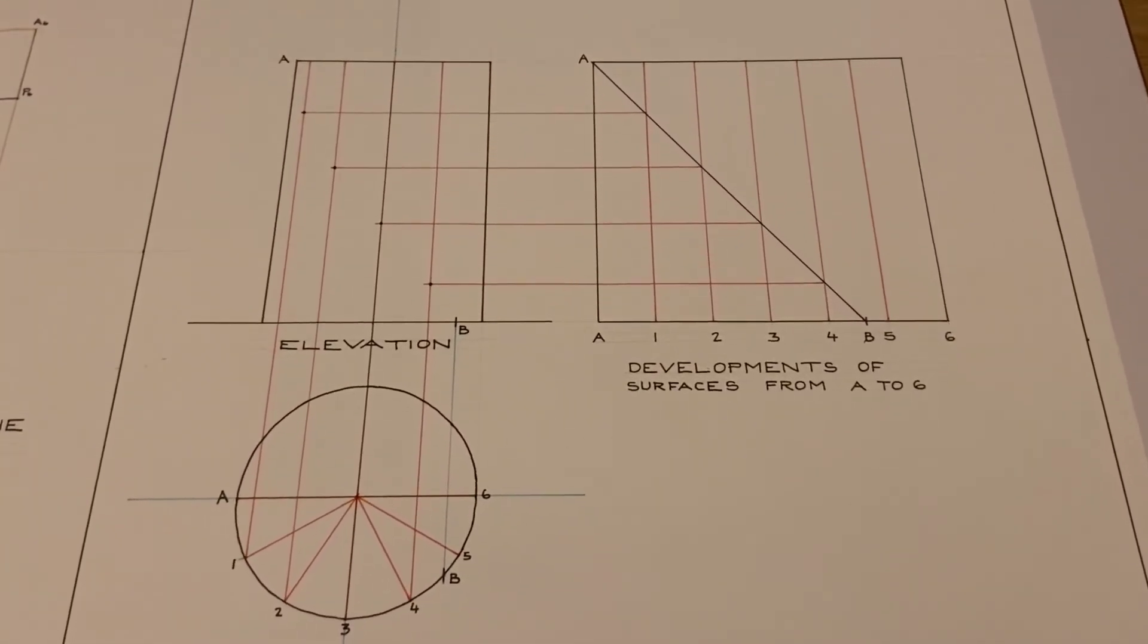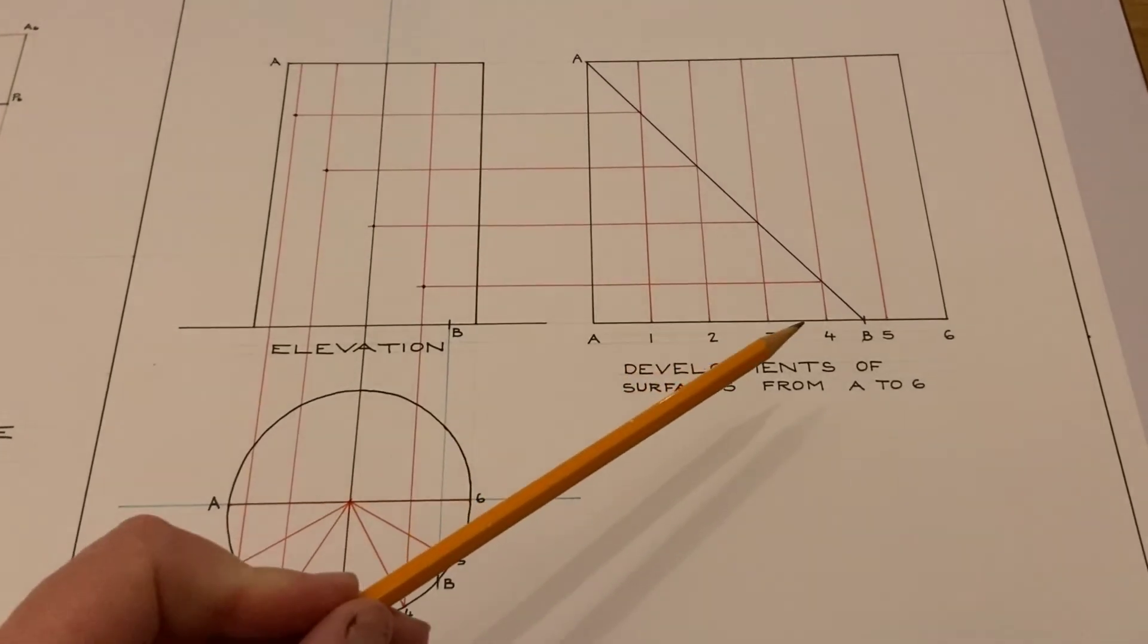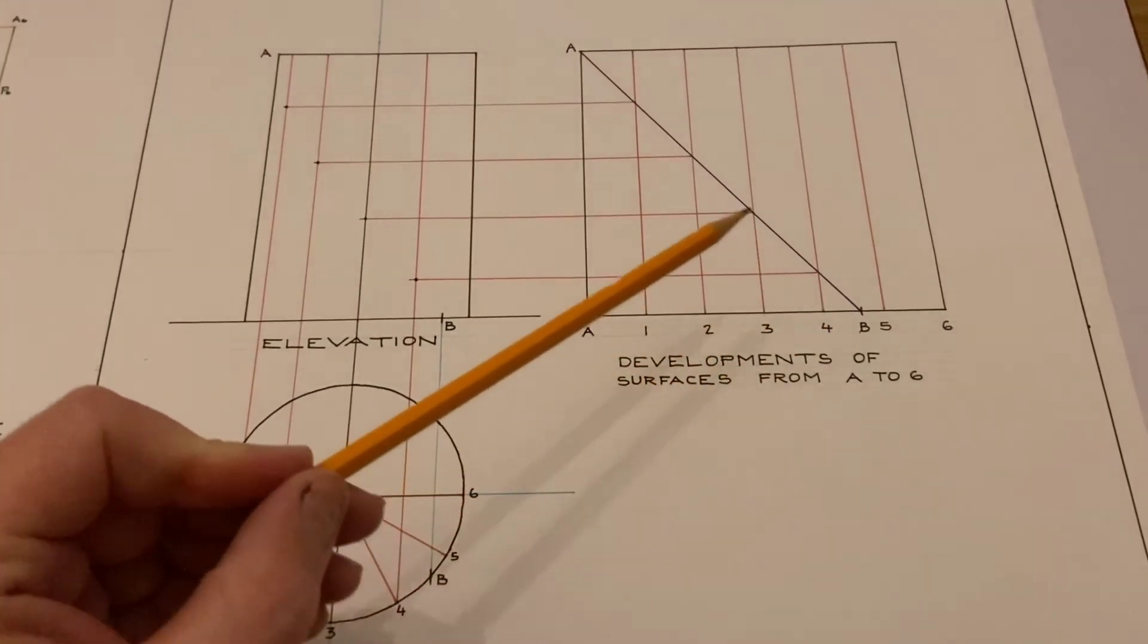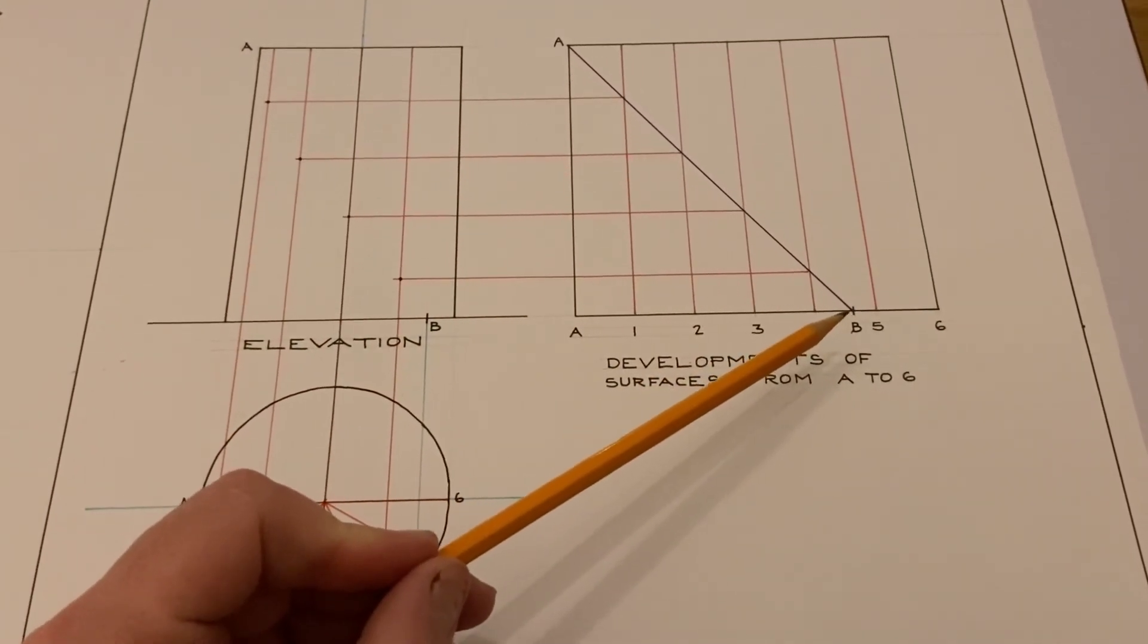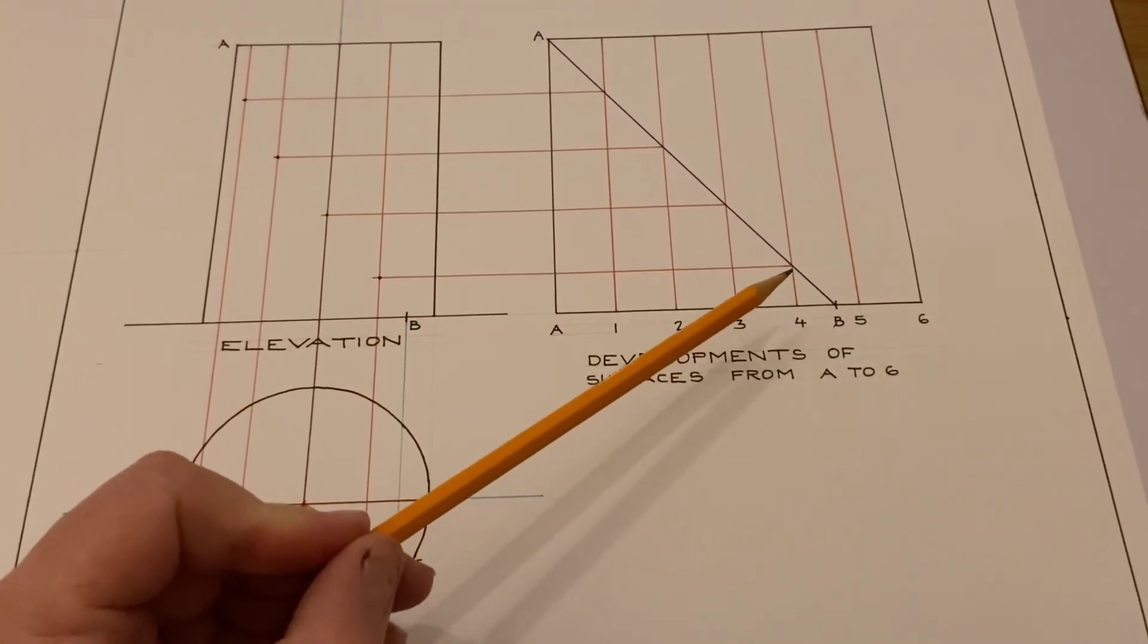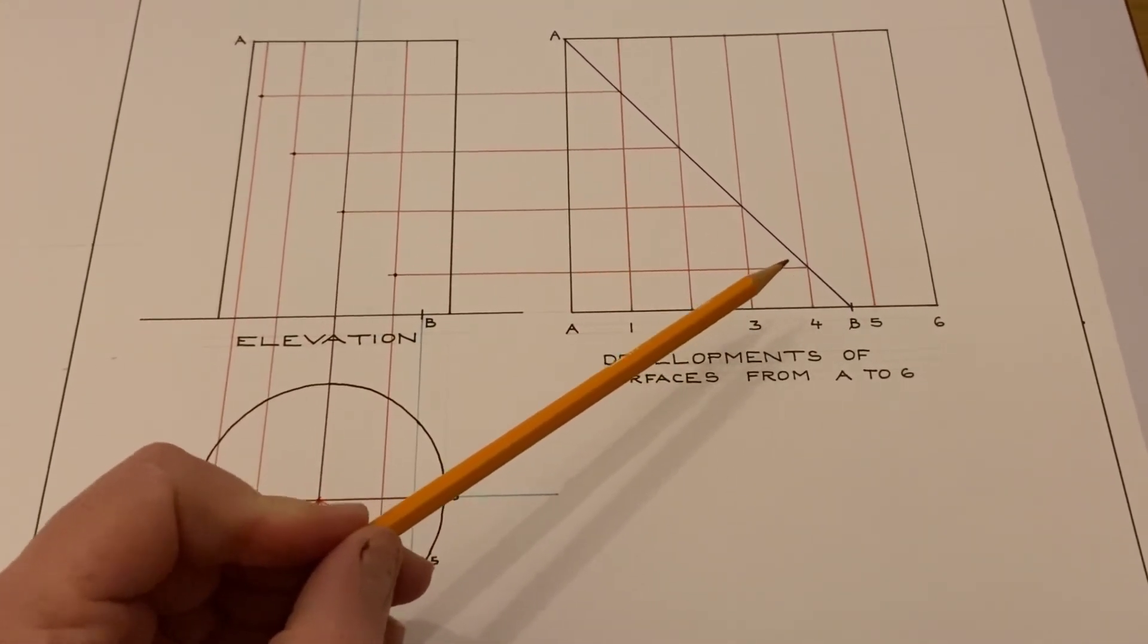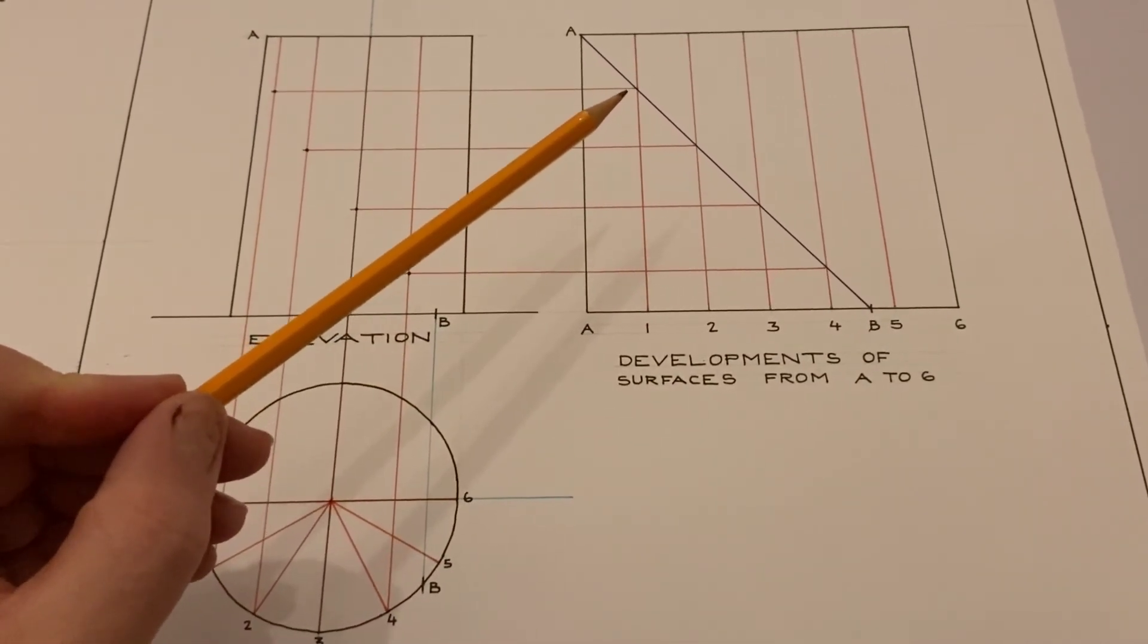So the helix is the path of a straight line around the cylinder and the straight line is running from B up to A. So we connect a straight line from B as far as A on the development and that cuts the line 4, 3, 2 and 1 in those locations there.